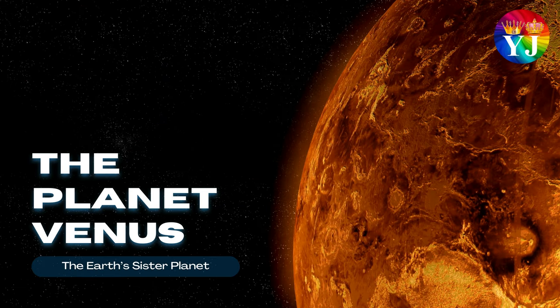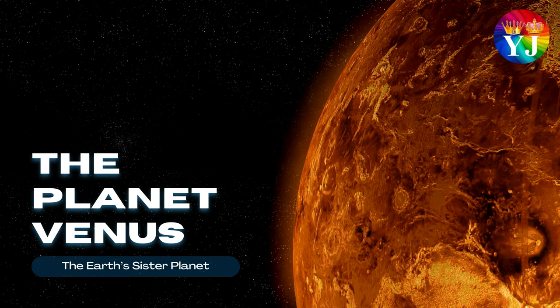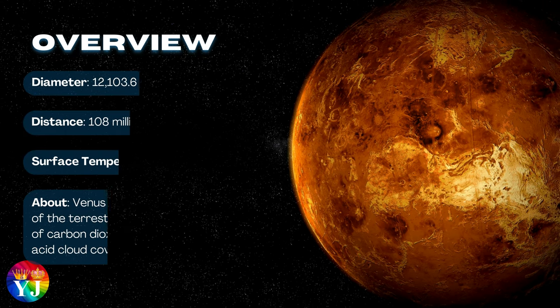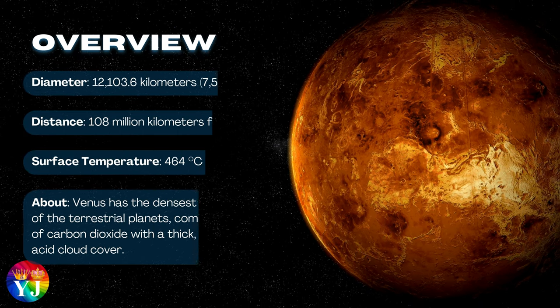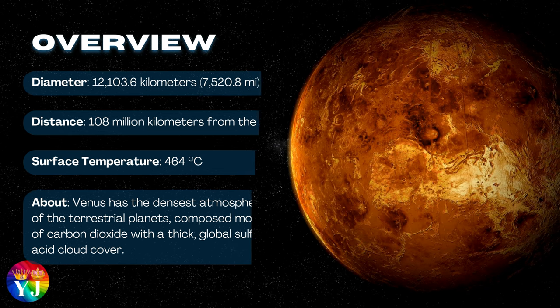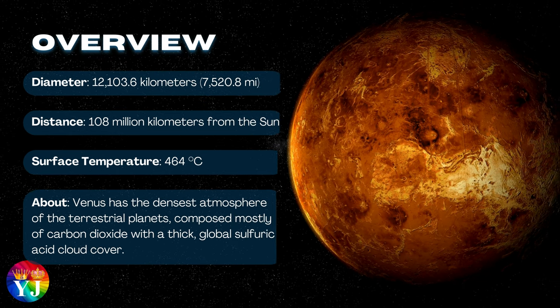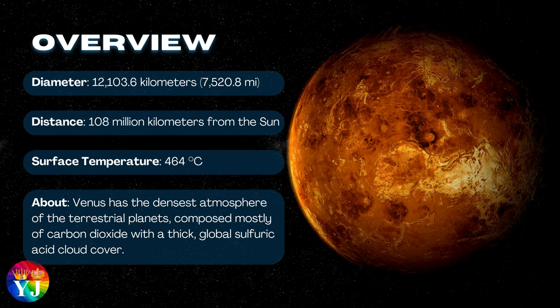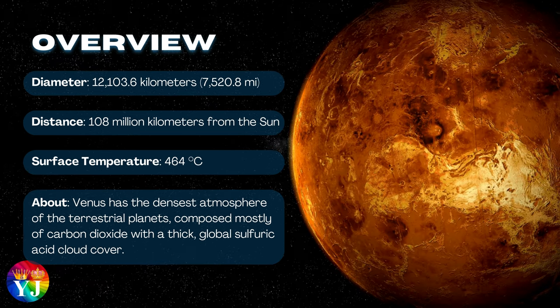The planet Venus, the Earth's sister planet. Overview of Venus: Diameter 12,103.6 kilometers, Distance 108 million kilometers from the Sun, Surface temperature 464 degrees Celsius.